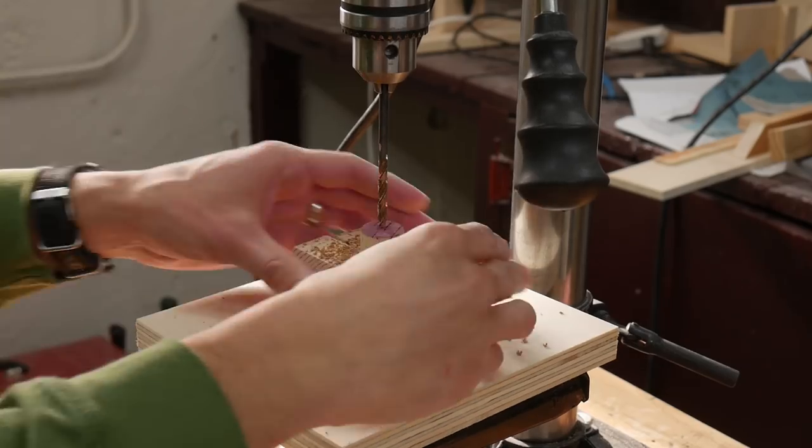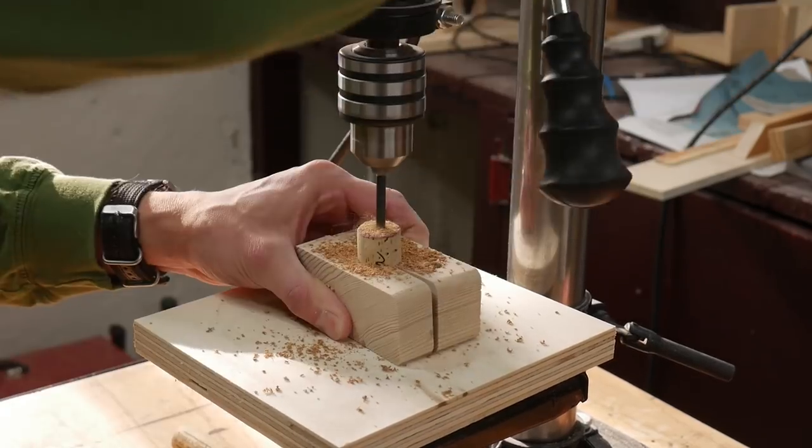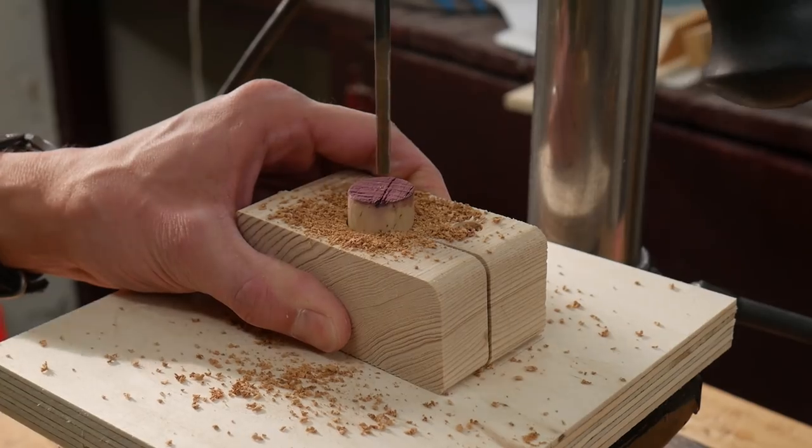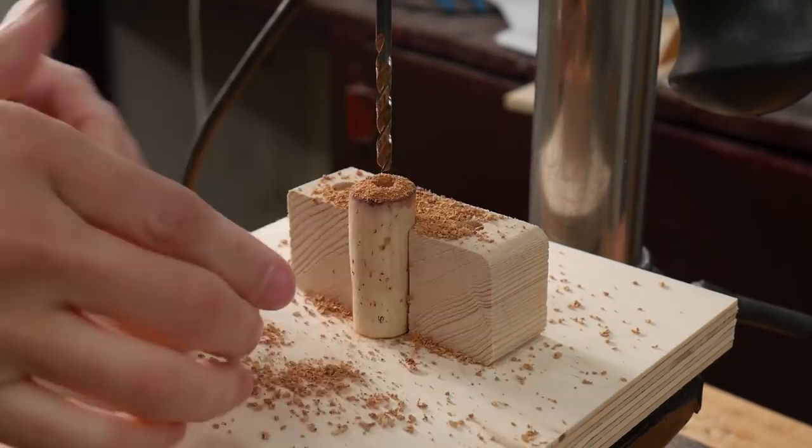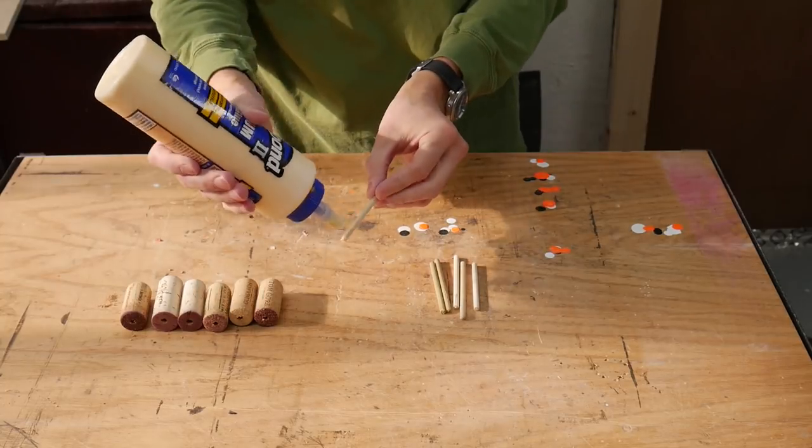I made a little jig to help drill exactly the center of the corks. It doesn't work perfectly but that's okay. Then I glued the dowels into the wine corks.